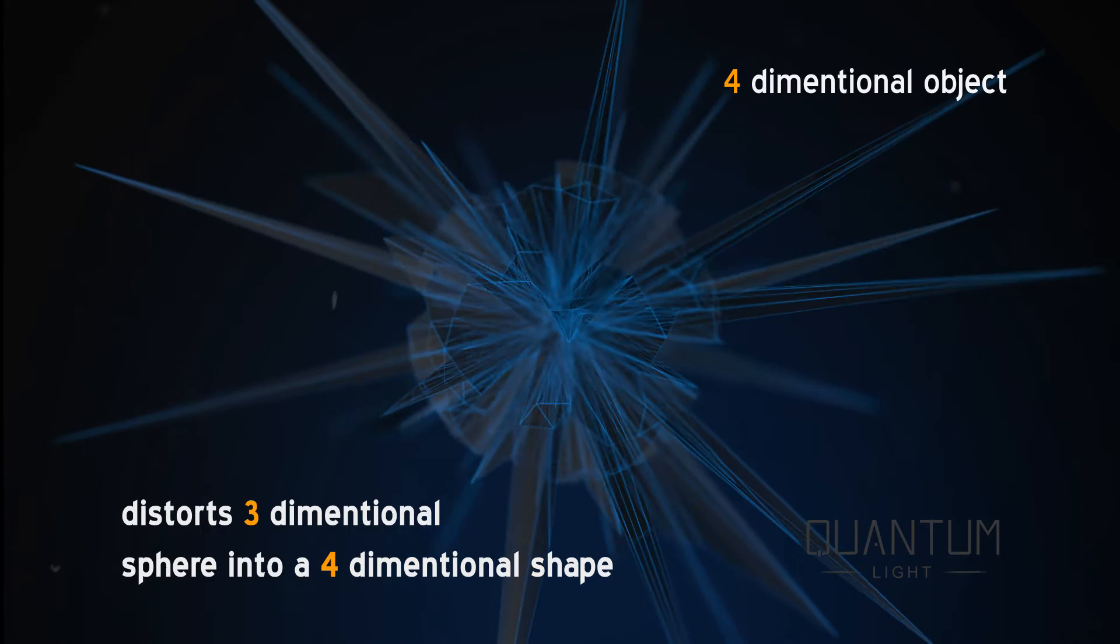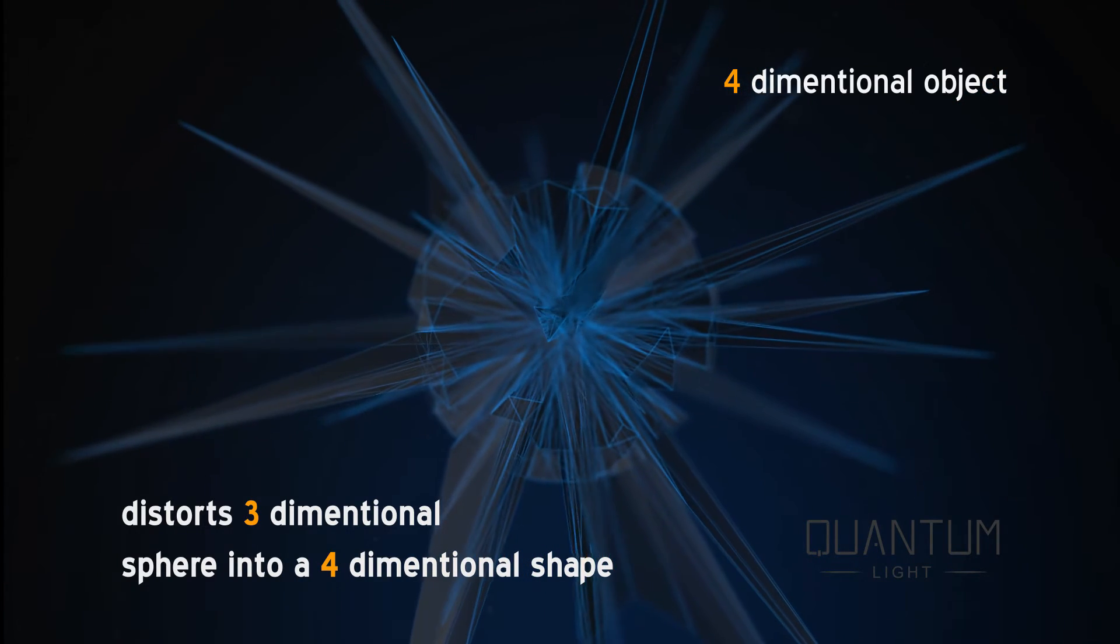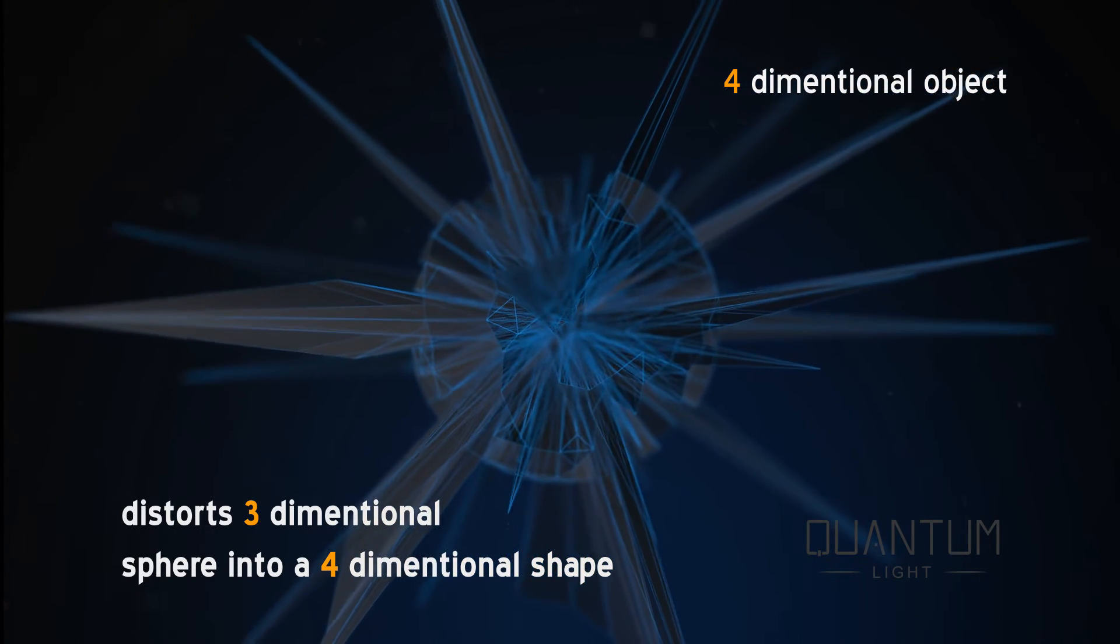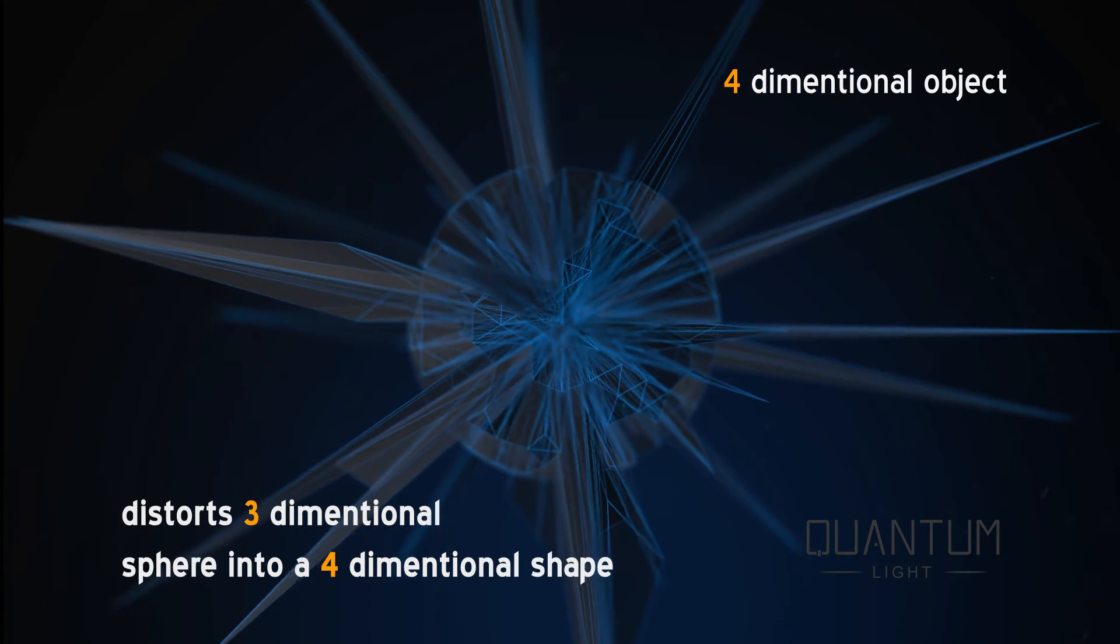But there's a problem. I don't know how to draw a four-dimensional object. So I will distort my 3D sphere like this to show it being warped into a fourth dimension.